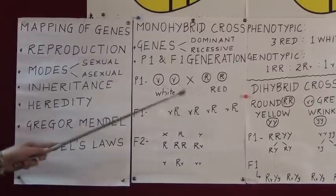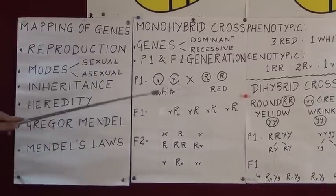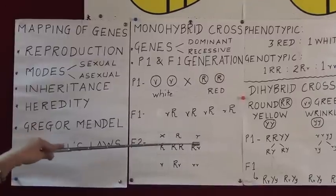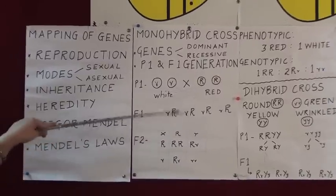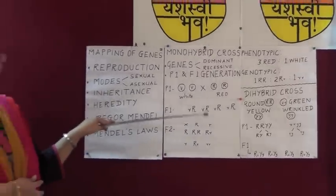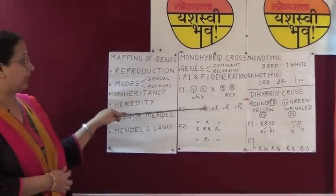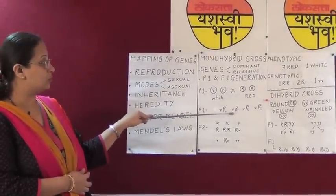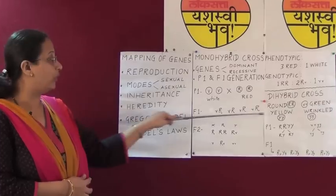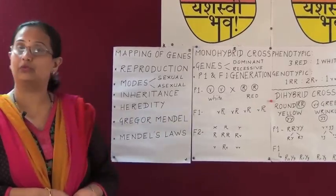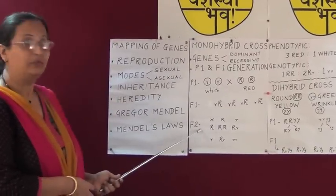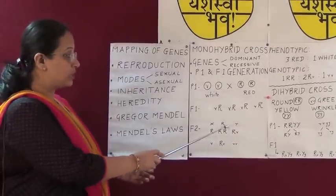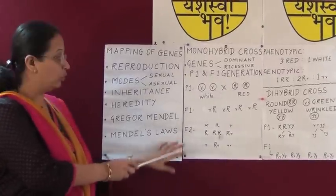After crossing we get the first generation, called the F1 or filial generation. In F1 we can see the crossing giving capital R small r, capital R small r — four gametes are formed. The F2, that is the second filial generation, shows the next level of crossing.